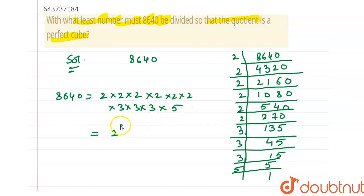So we got the answer because only 5 is a number which is not having its triplet. 2 is only having 2 triplets. 3 is also in triplet. If we divide this number by 5, the answer will be a perfect cube. So answer is 5.